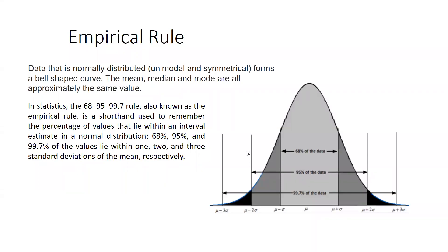Hi everyone, let's begin — how to solve normally distributed curve related problems. In this curve you can see it is normally distributed, unimodal, and symmetrical in form: a bell-shaped curve. You can see mu — that is the population mean — marked on the curve.